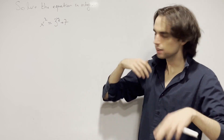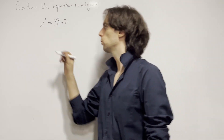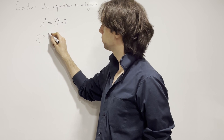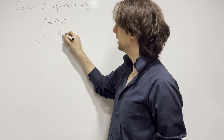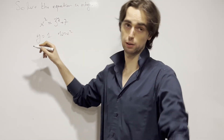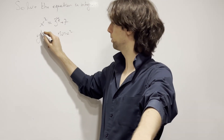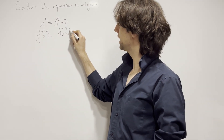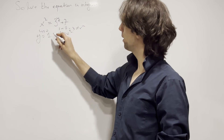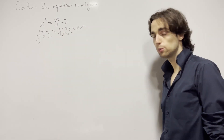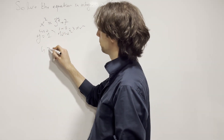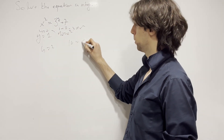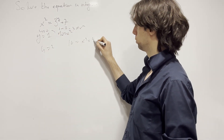If y equals 1, we have 3 plus 7, which is 10. That's x squared — no solution. But wait, what about y equals 0? Then we have 1 plus 7, which is 8. Not a perfect square. Now what about y equals 2? We have 9 plus 7, which is 16. That's a square — it's equal to 4 squared!